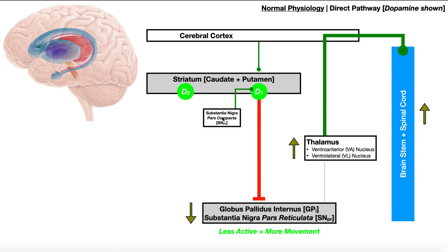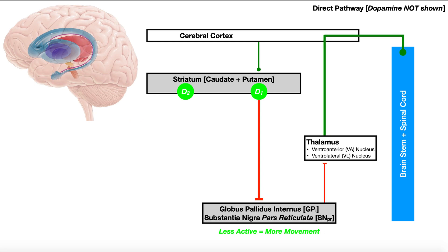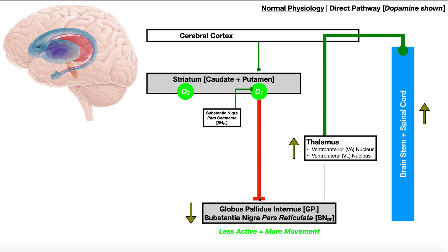Here's a specific region of the substantia nigra called the substantia nigra pars compacta, or PC. This is actually the region of the substantia nigra that is impacted in Parkinson's disease, and you can see it has an impact on the direct pathway. The substantia nigra can actually modulate the direct and indirect pathways by releasing dopamine. The regions of the striatum involved in the direct pathway have what are called D1 receptors — receptors for dopamine. The substantia nigra releases dopamine that binds to these D1 receptors, and the key is that dopamine has an excitatory or activation effect at D1 receptors. So comparing to without dopamine: before, we had inhibition of the globus pallidus internus, but with dopamine we now have more inhibition.